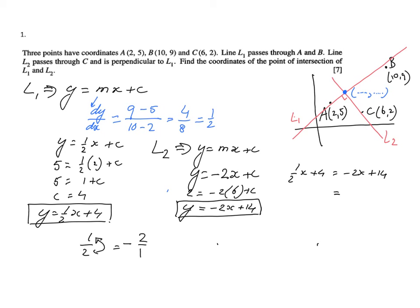So a half x plus 4, when is that equal to minus 2x plus 14? You've got to solve that particular equation, one unknown in x. So you have a half x plus 2x, which will give you 2 and a half x. And you have 14 minus 4, which is 10. Then you divide both sides by 2 and a half. 10 divided by 2 and a half is 4. So the x coordinate is 4.